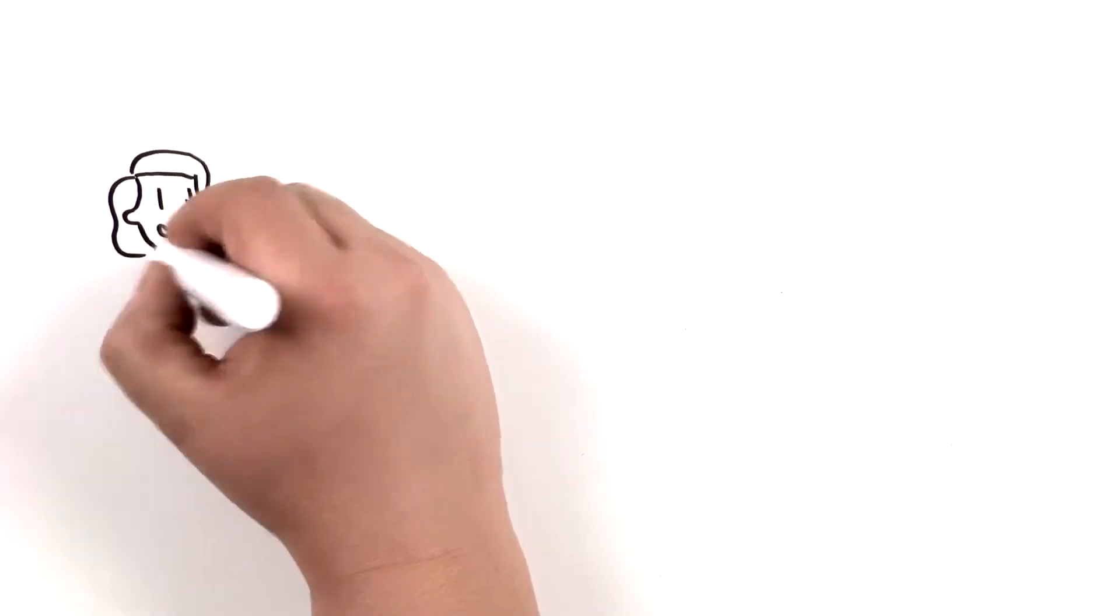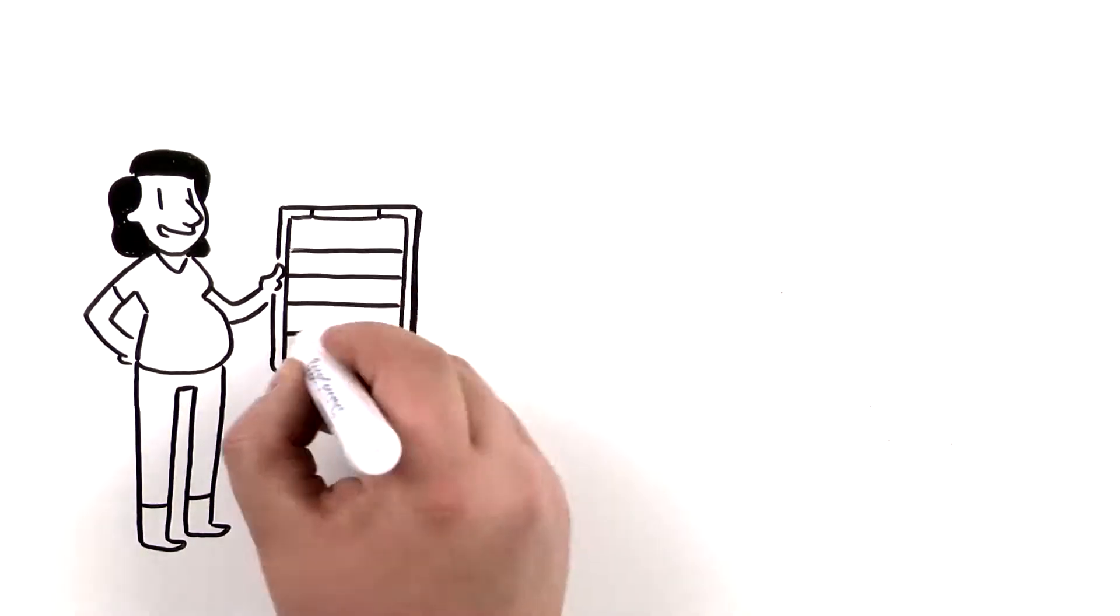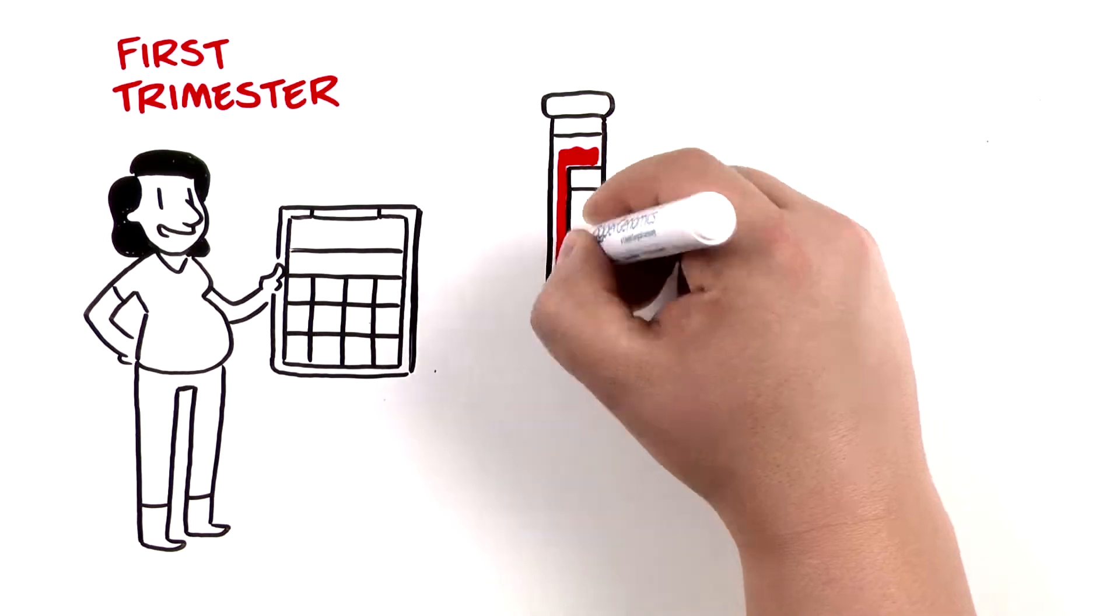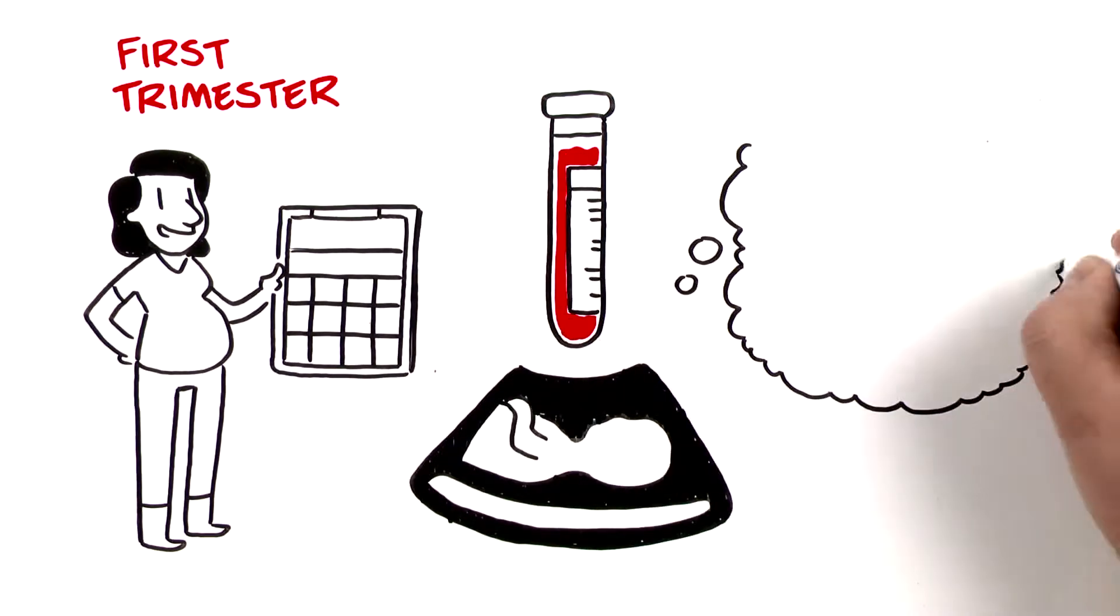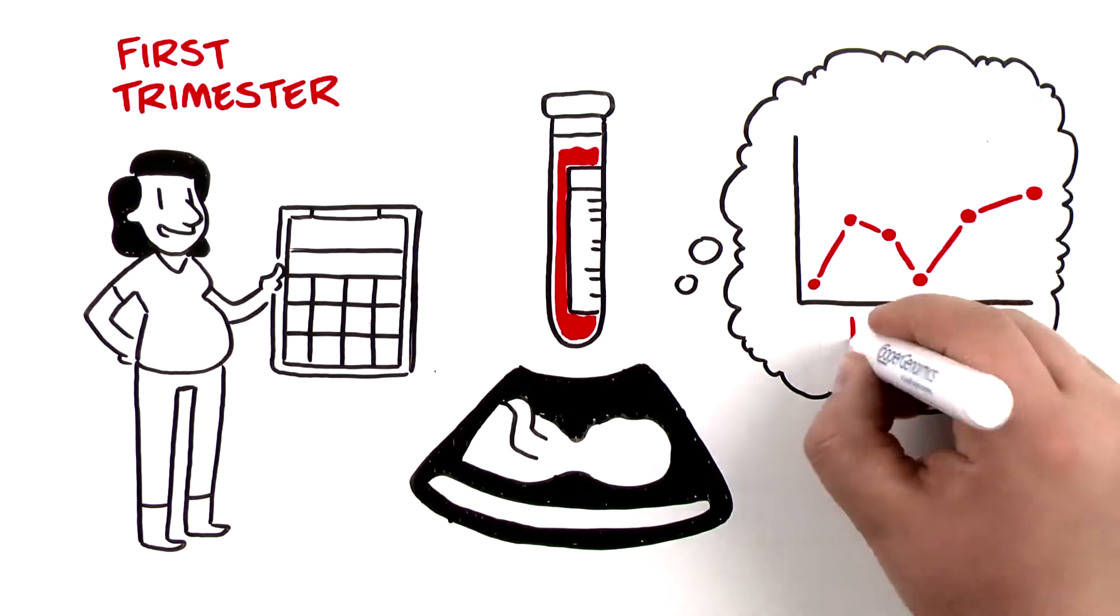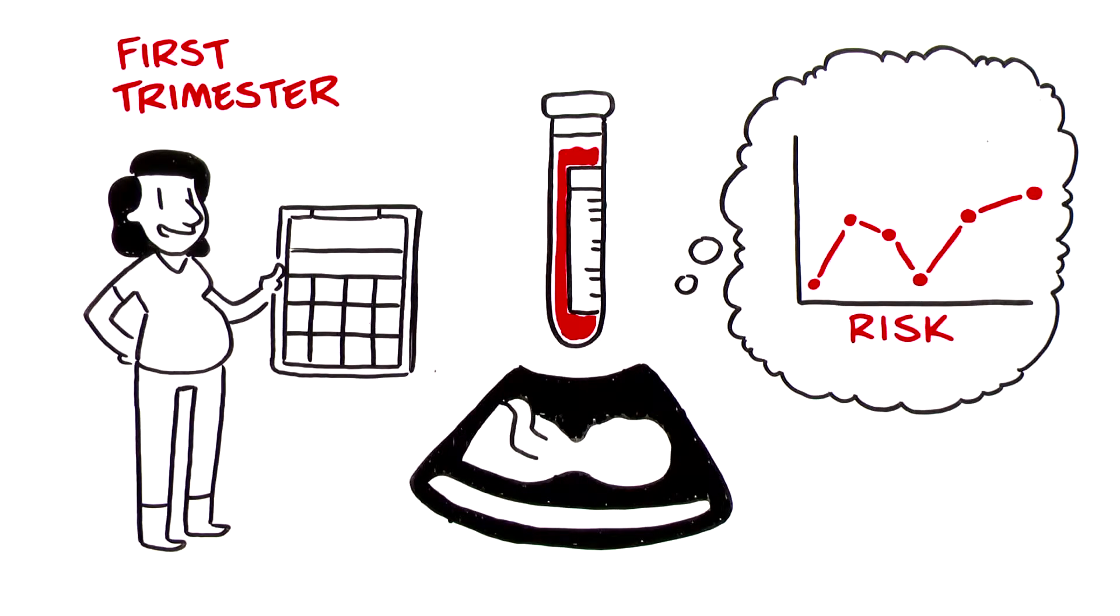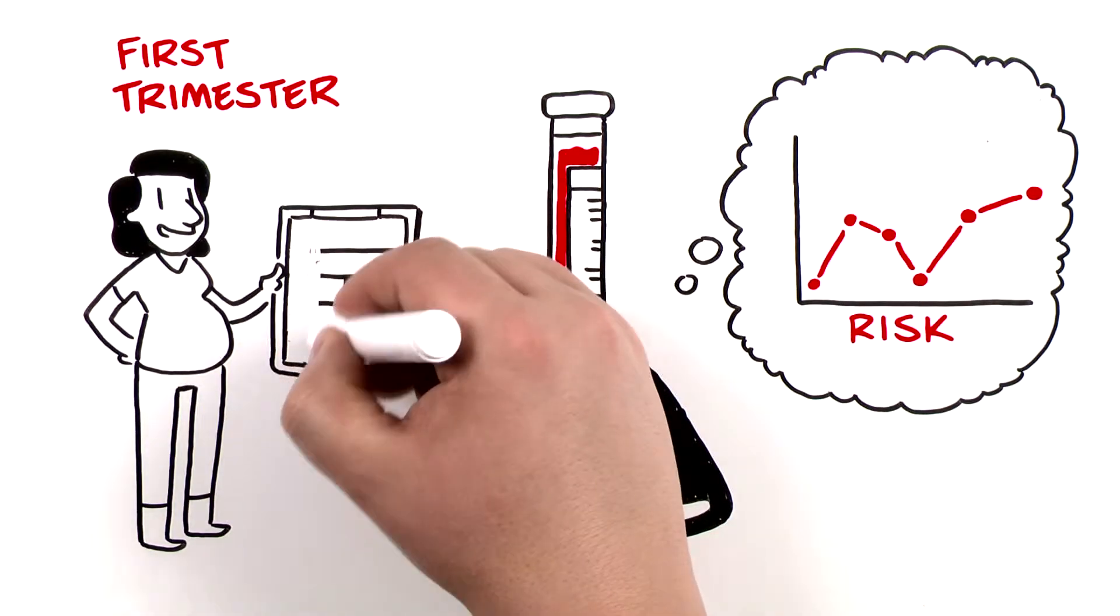The traditional screening options during your first trimester are a hormonal blood test combined with an ultrasound exam to provide an idea of your estimated risk, described by a scoring or rating system. And although these methods are safe, a better technology now exists that provides more information than these basic screening options.